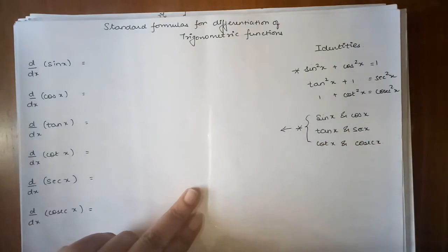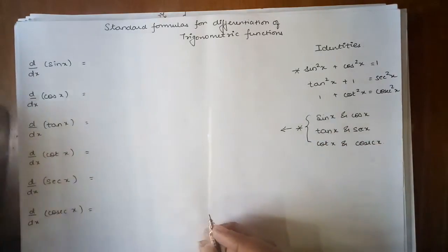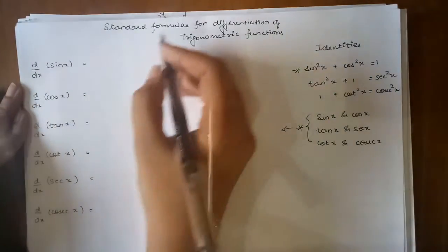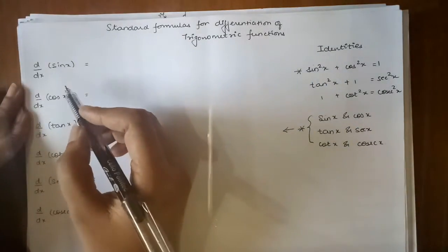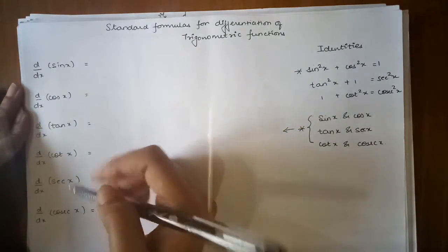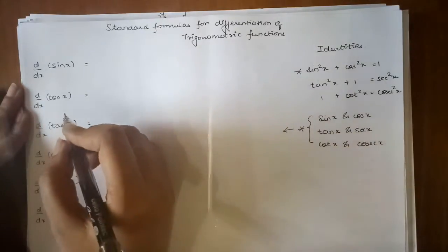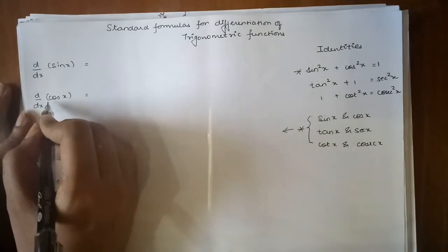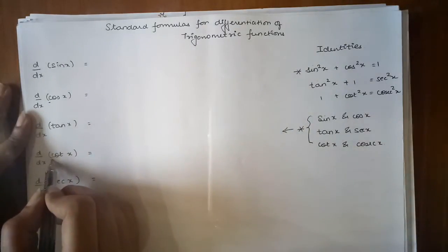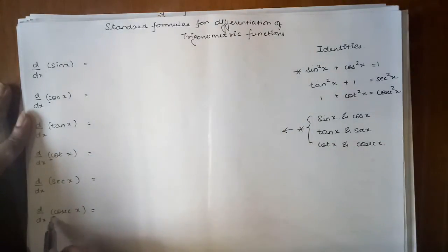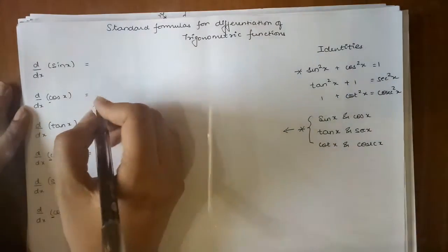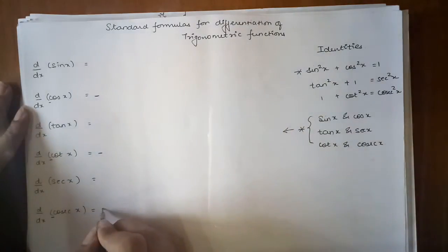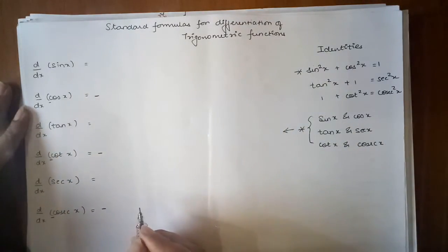This is my basis for getting the standard formulas for differentiation. Now, I want us to know that whenever in differentiation your question starts with the letter C — that means cos x, differentiation of cot x, and differentiation of cosec x — everywhere the answer will have a negative sign ahead of it.